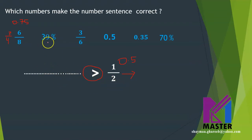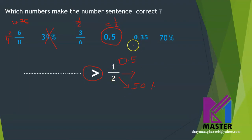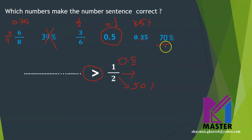What about 39%? Thirty-nine percent is less than 50% because the half is also 50%, so it's not greater than the half. What about 3 sixths? Three sixths is equal to half, so they are equal — it's not greater than half. What about 0.5? The 0.5 is equal to half as well, so it's not greater than the half. What about 0.35? That is the same as 35%, which is smaller than 50%, and also smaller than 0.5 — we have 3 in the tenths, and here we have 5 tenths, so it is smaller. What about 70%? Yes, 70% is greater than half, which is 50%. So the answers are 6 over 8 or 70%.